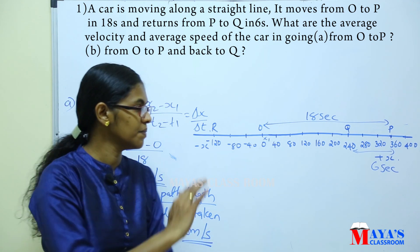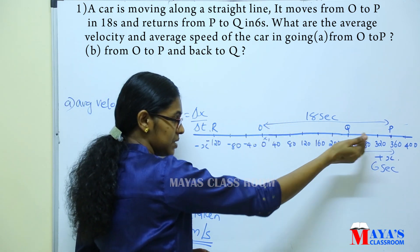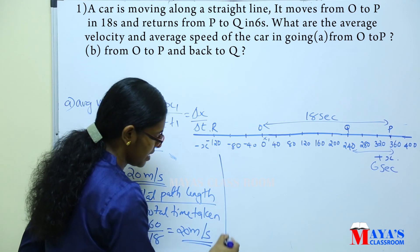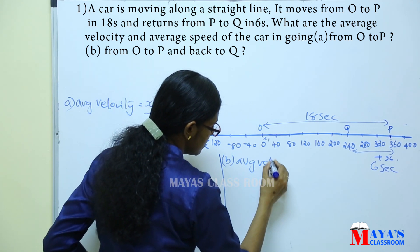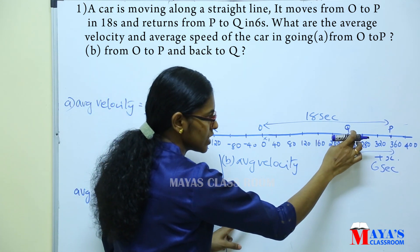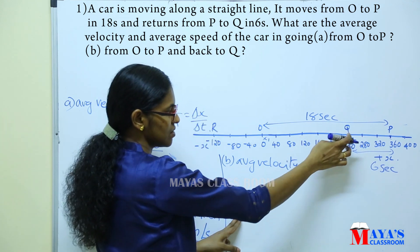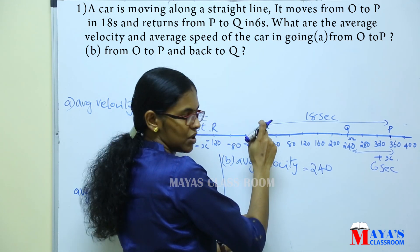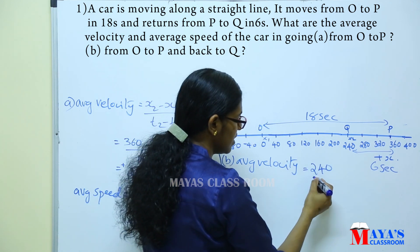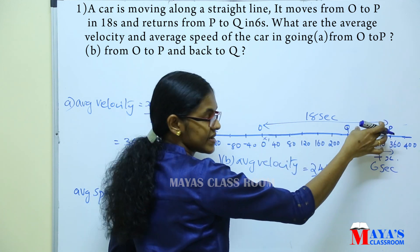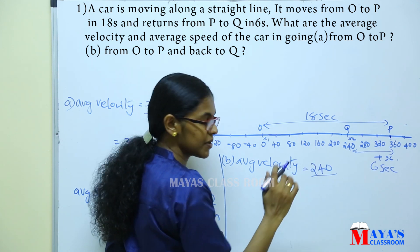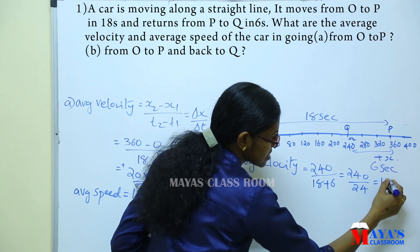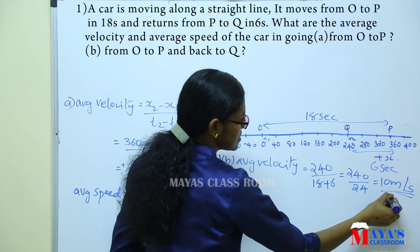Now for the journey from O to P and back to Q. The final position x2 is equal to 0 at Q. Total time is 18 plus 6 equals 24 seconds. So average velocity is 240 divided by 24, which equals 10 meters per second.